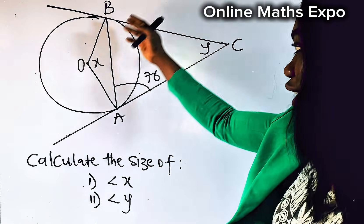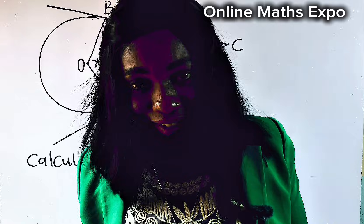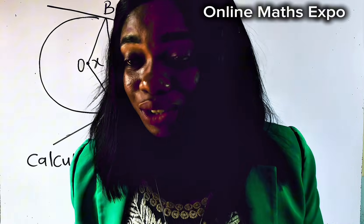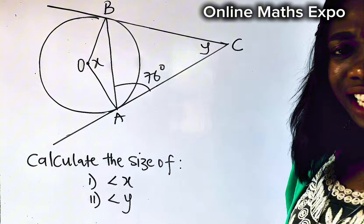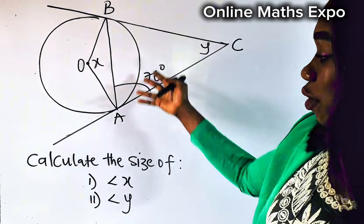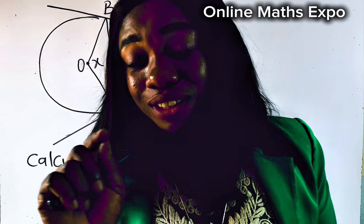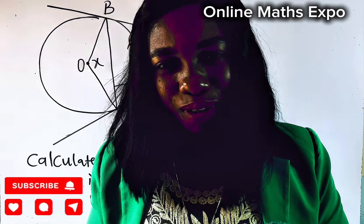We have this beautiful circle question and nothing was said about the question. The only thing we are asked to do is to calculate the size of these angles, x and y. Is this something you can do? For you to answer this question, your ability to identify some circle properties and theory is what will help you to do it well.